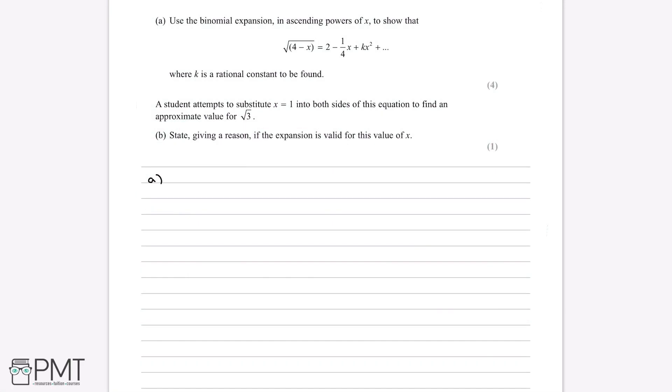Use the binomial expansion in ascending powers of x to show that root 4 minus x is equal to 2 minus a quarter x plus kx squared plus etc, where k is a rational constant to be found.